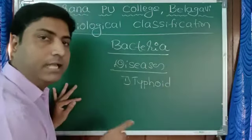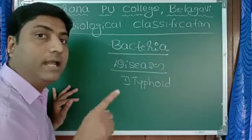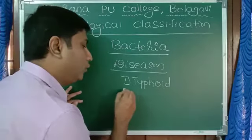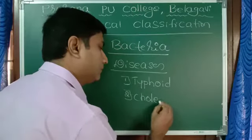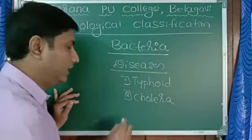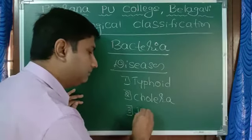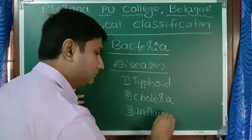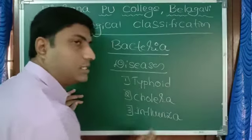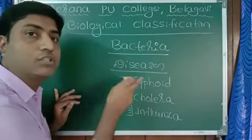Typhoid is caused by a bacterium called Salmonella typhi. Similarly, cholera is caused by Vibrio cholerae. Similarly, Influenza is caused by Haemophilus influenza. Like this are number of diseases which are caused by bacteria.